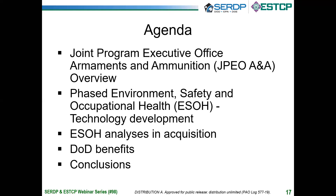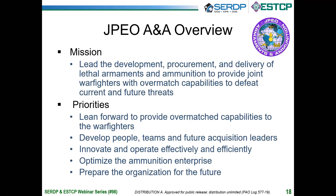On slide 18, who are we at JPEO Armaments and Ammunition? Our mission includes leading the development, procurement, and delivery of lethal armaments and ammunition, providing joint warfighters overmatched capabilities to defeat current and future threats worldwide. Our priorities include delivering these capabilities, developing our teams and future acquisition leaders, practicing innovation to operate effectively and efficiently, optimizing the ammunition operation enterprise, and looking forward towards the future.